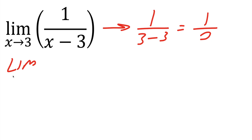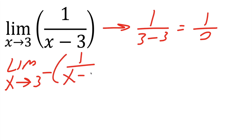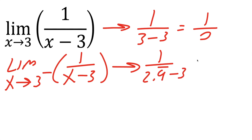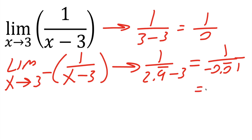If we take the limit as x approaches three to the left, that's like 2.999 with repeated nines. The problem is one divided by x minus three. We would get one divided by 2.9999 repeated minus three, which gives us one divided by a very small negative number — like negative 0.000...001. One divided by a very small negative number gives us negative infinity. So this piece is going to be negative infinity.